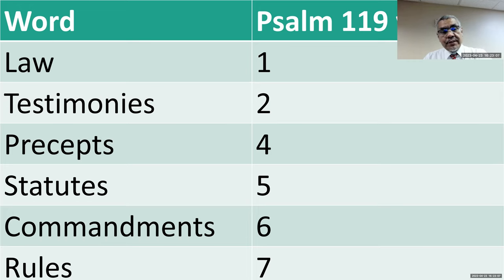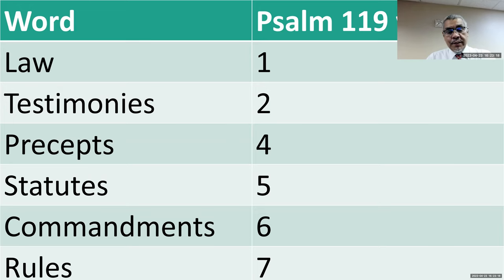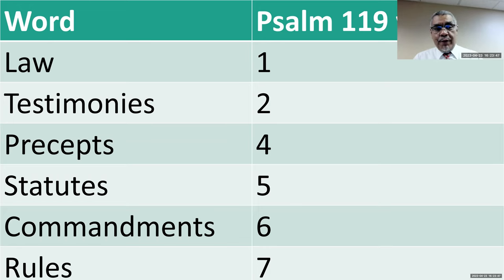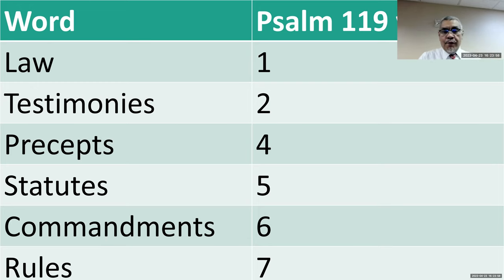Their first occurrence is cited here in verse format. The first verse of Psalm 119 is where the word for law occurs — our current word, Torah. The next word, testimonies, occurs in verse 2. Precepts occur in verse 4 for the first time. But all of them occur and recur in Psalm 119 many times. The point of this chart is that there are no fewer than half a dozen different words for the word of God, and they all occur within the first stanza, aleph.